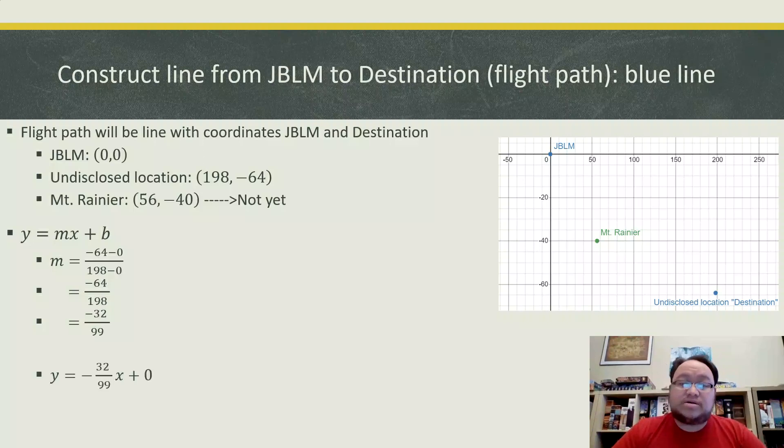And we can simplify this to -64/198 or -32/99. So our slope is going to be -32/99. And our equation is going to be -32/99x plus 0. So we already know what our y-intercept is because JBLM is at the origin. So that gives us our y-intercept. So instead of plus 0, we can keep it as just -32/99x.